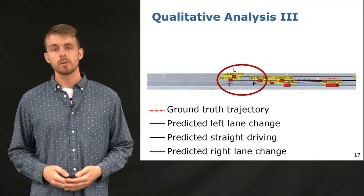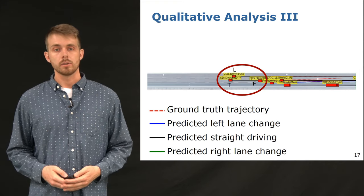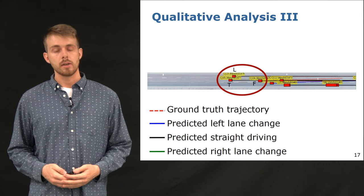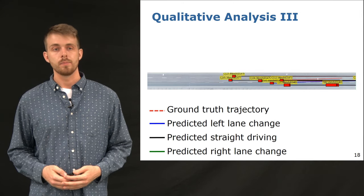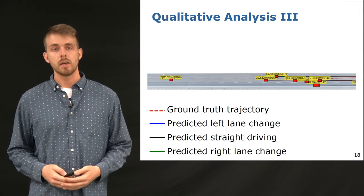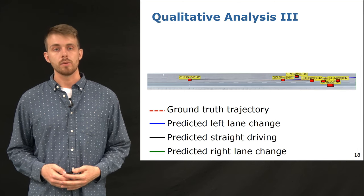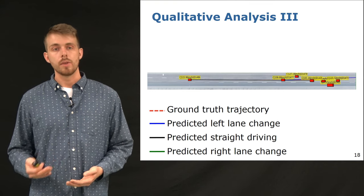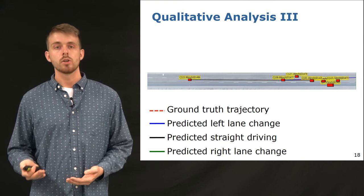The next scene shows two cars on the middle lane driving at a similar speed. The target car T in the back is going to accelerate and overtake. Since this behavior is not directly visible from the past states and the neighborhood configuration, our approach first predicts a straight driving maneuver and then switches to a lane change prediction, shown here in blue.